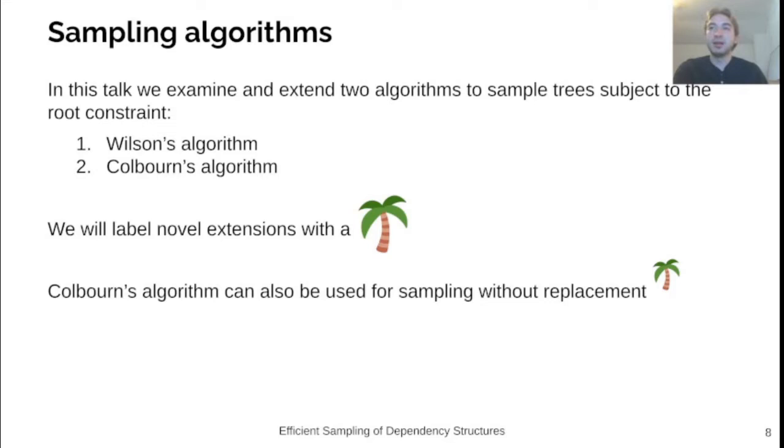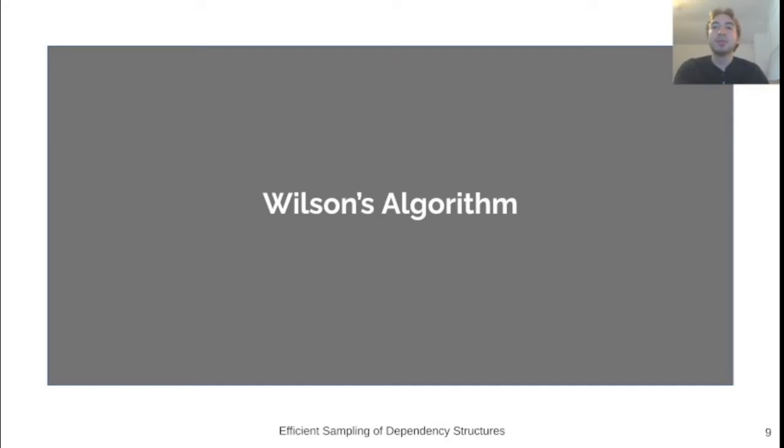In this paper, we modify two existing sampling algorithms, Wilson's algorithm and Colburn's algorithm, to respect the root constraint. Here, a tree emoji will be used throughout the presentation to indicate novel contributions we made to these algorithms. We will also give the first sampling without replacement algorithm for dependency trees.